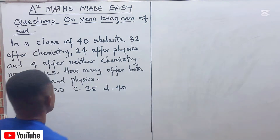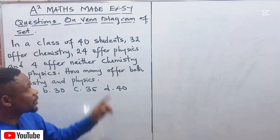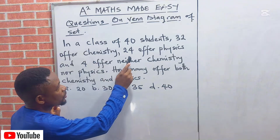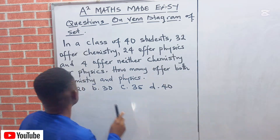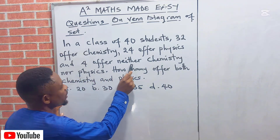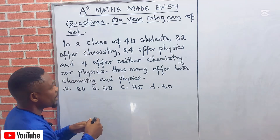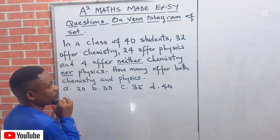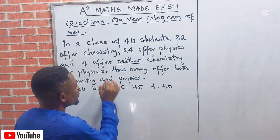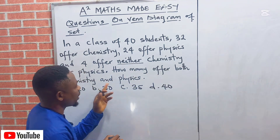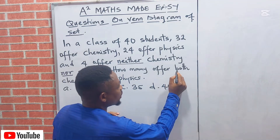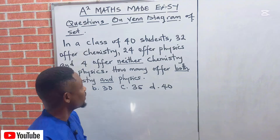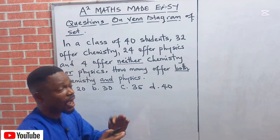The question says: in a class of 40 students, 32 offer chemistry, 24 offer physics, and 4 offer neither chemistry nor physics. The question asks: how many offer both chemistry and physics? We are still talking about 'both,' which means we are looking for the intersection of chemistry and physics.